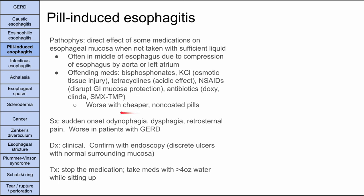This is usually worse with generic, non-coated pills; name brand pills may have a sugar coating that delays the effect. Symptoms are sudden-onset odynophagia, dysphagia, and retrosternal pain — usually worse in patients who already have GERD with damaged mucosa. Diagnosis is typically clinical, but endoscopy can confirm it, showing a localized ulcer where the pill got stuck with normal surrounding mucosa. Treatment is to stop the medication and instruct the patient to take pills with more water while sitting up.